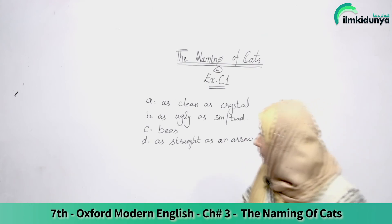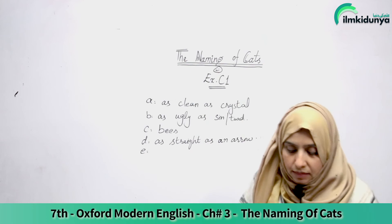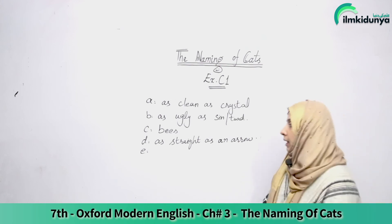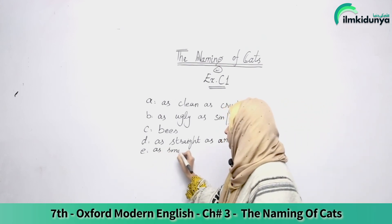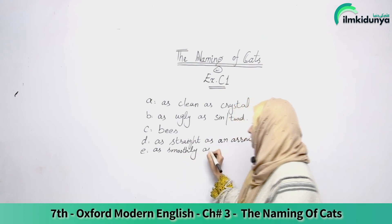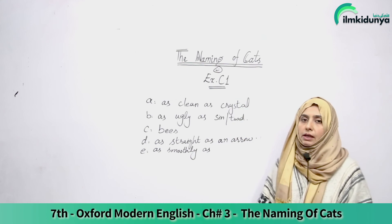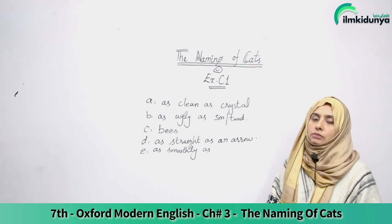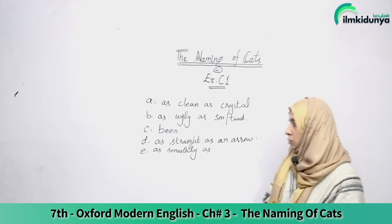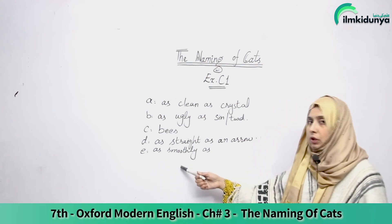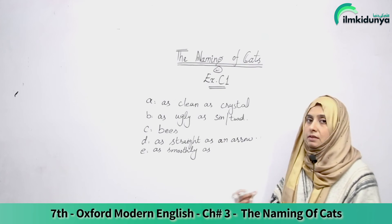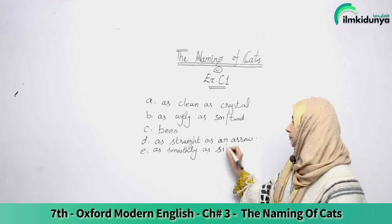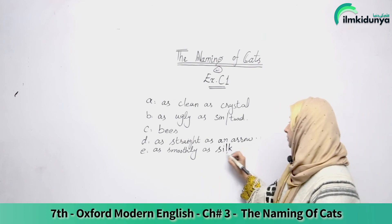'The big ship steamed into the harbor as smoothly as...' When we talk about smoothness, we describe it in a colorful way, using words that match. So as smoothly as — what will we use? Silk. 'As smoothly as silk' — we will write that here.